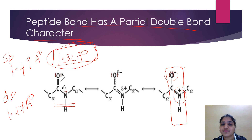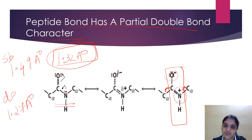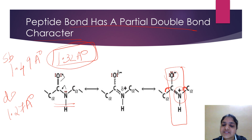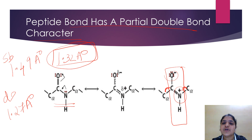Because of resonance, there is no freedom of rotation in the peptide bond. However, the Cα-C bond and the N-Cα bond movements are possible — the side chains are freely rotatable. But movement around the peptide bond itself is highly restricted because of the partial sharing of electrons.